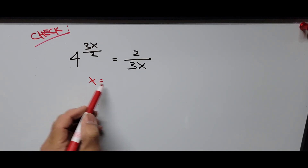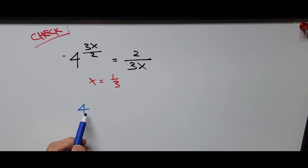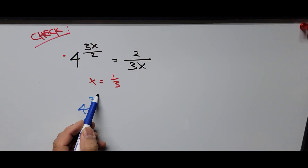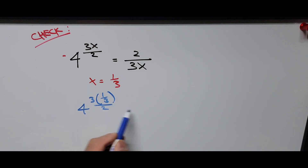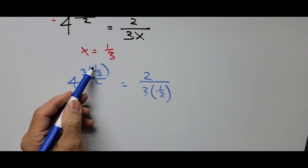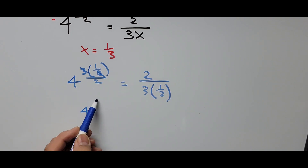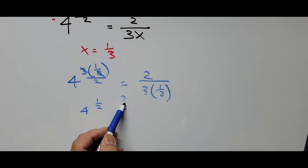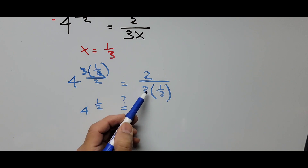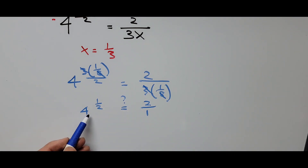With x as 1/3 substituted into the original equation, the left side becomes 4 to the power of 3 times 1/3 divided by 2. Simplifying: 3 times 1/3 cancels to 1, so the left side is 4 to the power of 1/2. The right side becomes 2 divided by 3 times 1/3, which is 2 divided by 1. So 4 raised to the power of 1/2 is the same as the square root of 4.